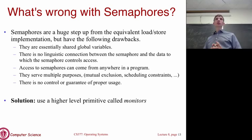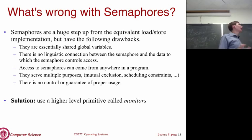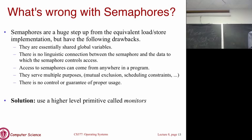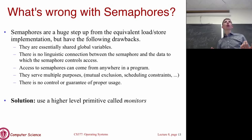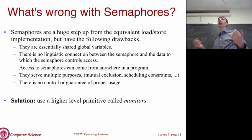Another problem with semaphores is that they're essentially a global integer that multiple threads modify — not ideal. There's no direct connection between the semaphore and the data it protects. We're inserting signals and waits all over the place without a clear relationship to the protected resource. This makes it easy to make mistakes and not get the intended behavior.